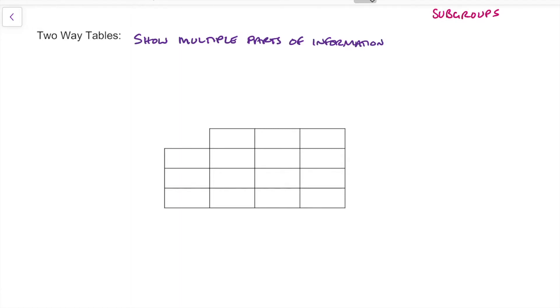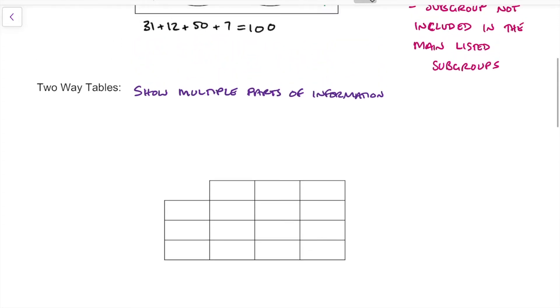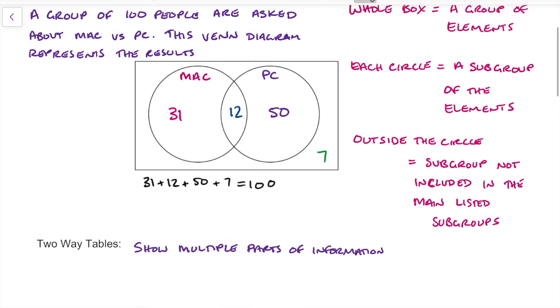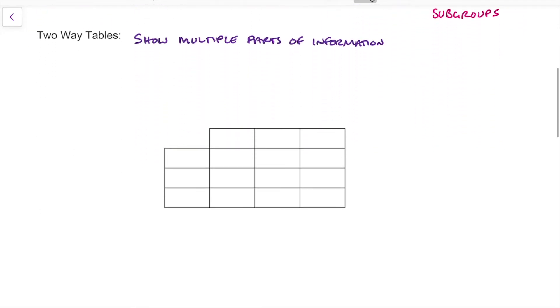So they show two groups as it were. If we were to use our Venn diagram information from before, we're going to pop that into this table and show how it all works together.